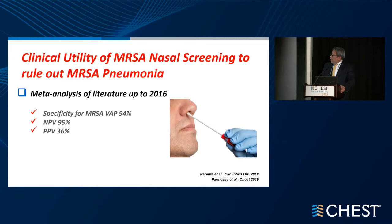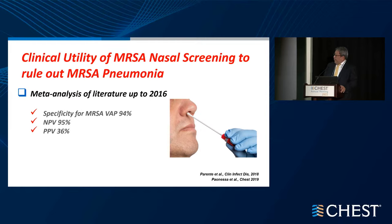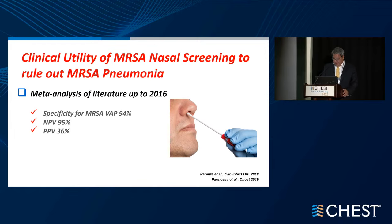The clinical utility of MRSA nasal screening to rule out MRSA pneumonia has been shown in many studies, including meta-analysis. The specificity of MRSA nasal swab for VAP is actually fairly high, and the negative predictive value is also very high. Dr. Wundering's group showed that using MRSA screening was able to decrease antibiotic use while maintaining clinical outcomes.